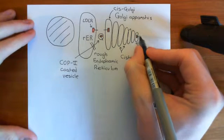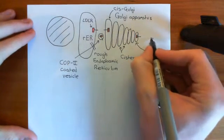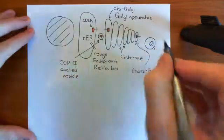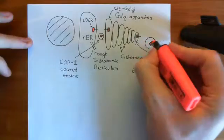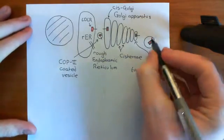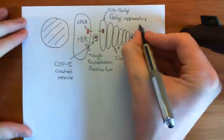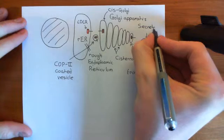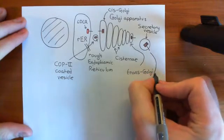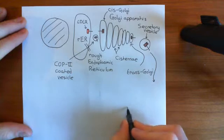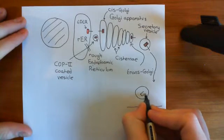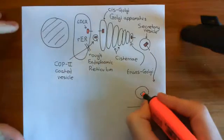What's going to happen is you're going to bud a vesicle off the trans-Golgi, and this sort of vesicle is called a secretory vesicle because it's now going to go to the plasma membrane. What will happen is this secretory vesicle will go to the plasma membrane, and I can show you the process of the secretory vesicle fusing with the plasma membrane.